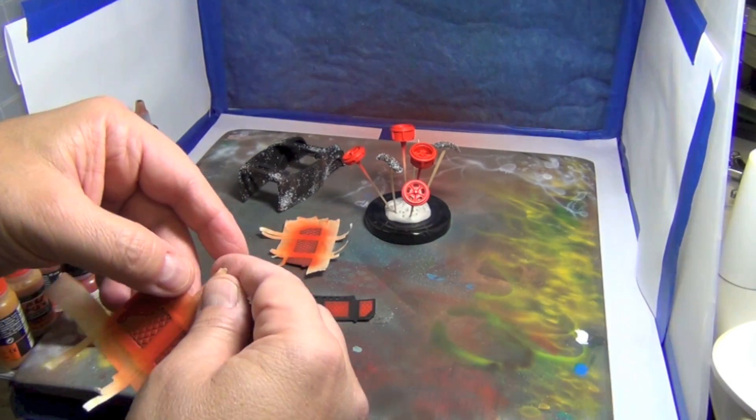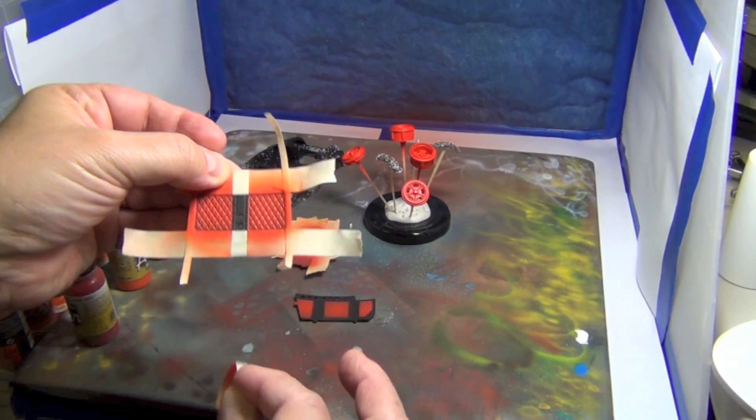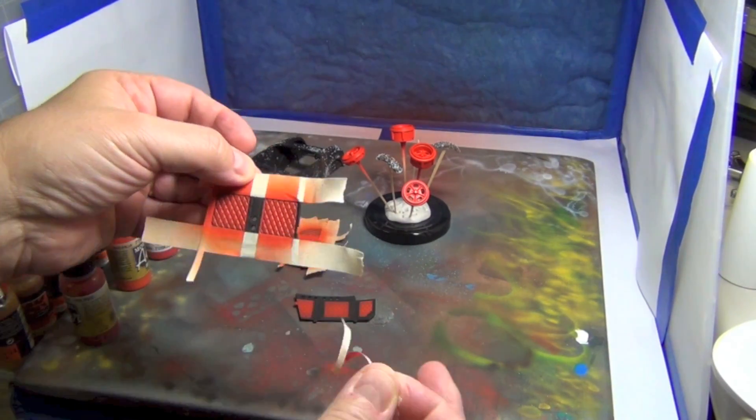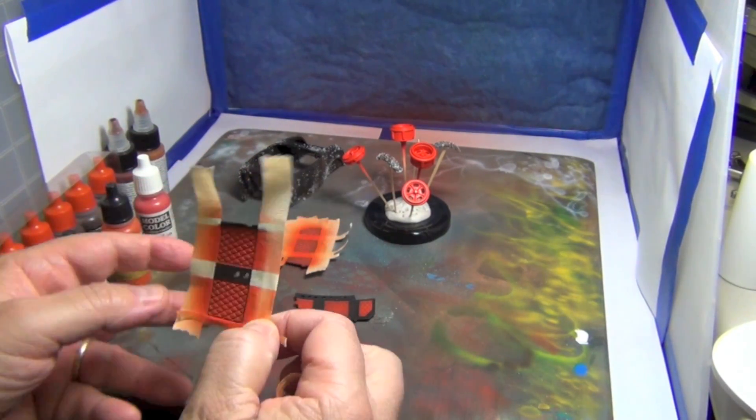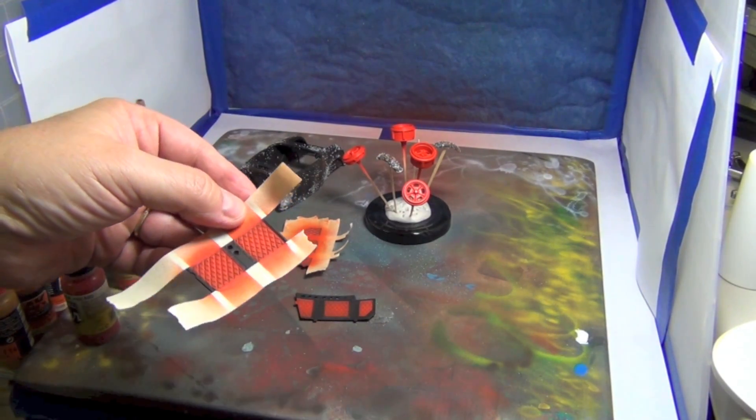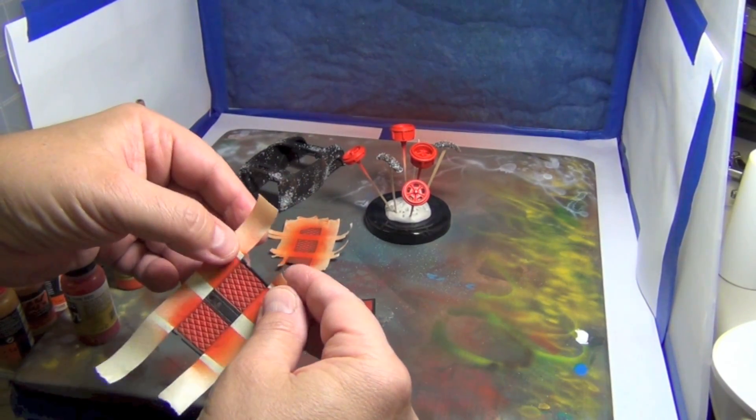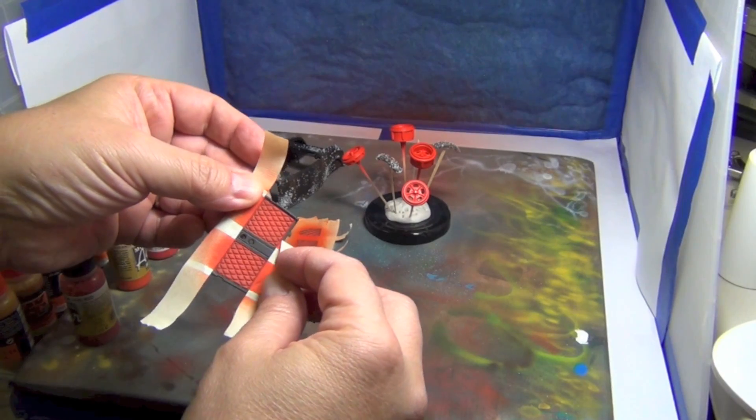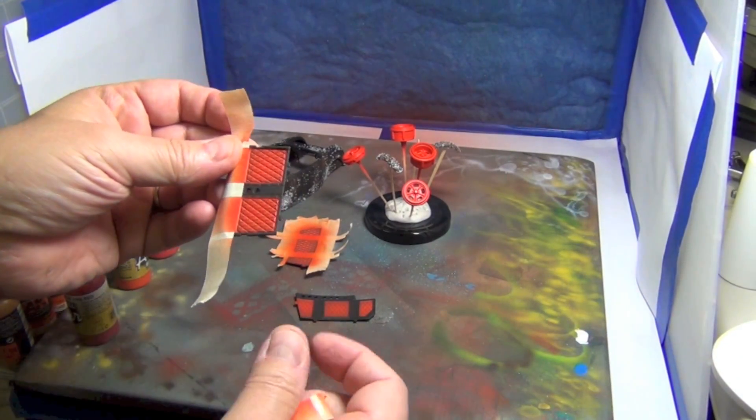This is tape that I get from Coast Airbrush. I believe it's 3M 237 tape, something like that, and it just goes down smooth.